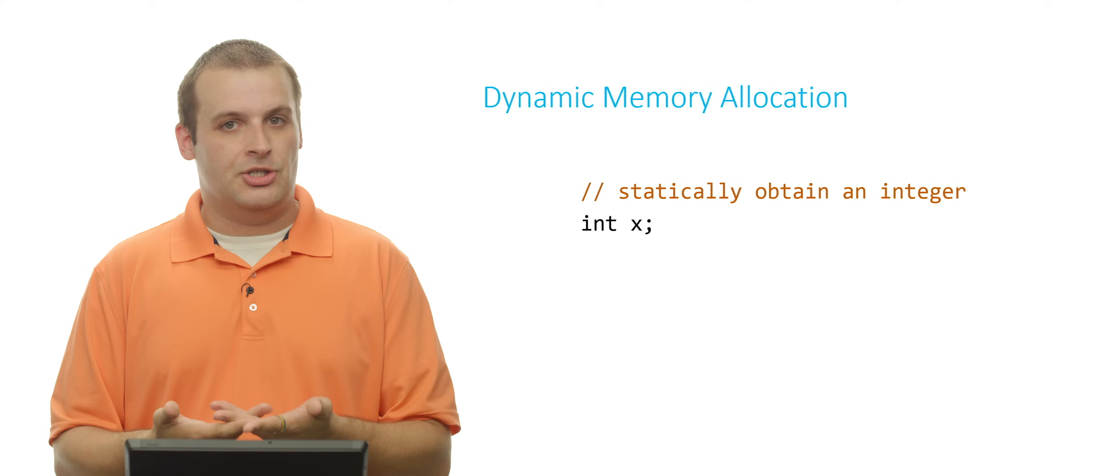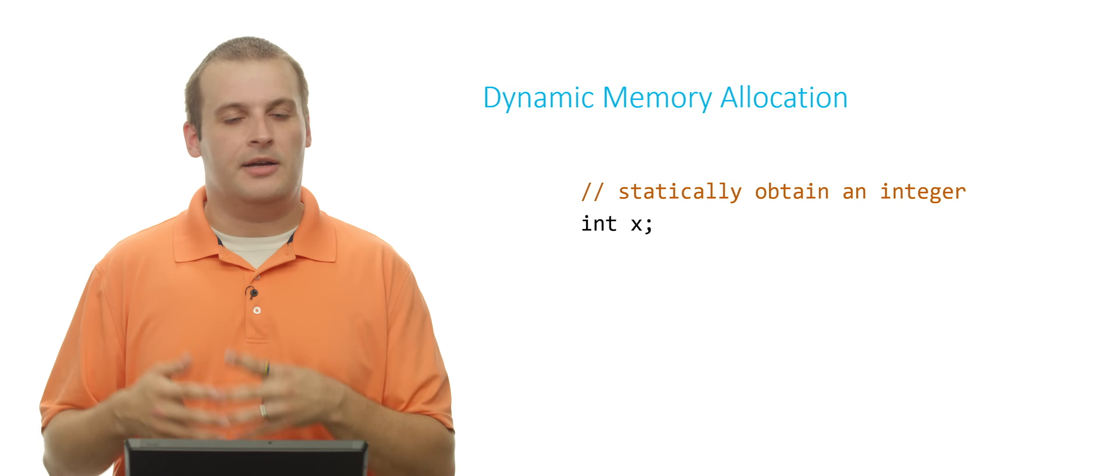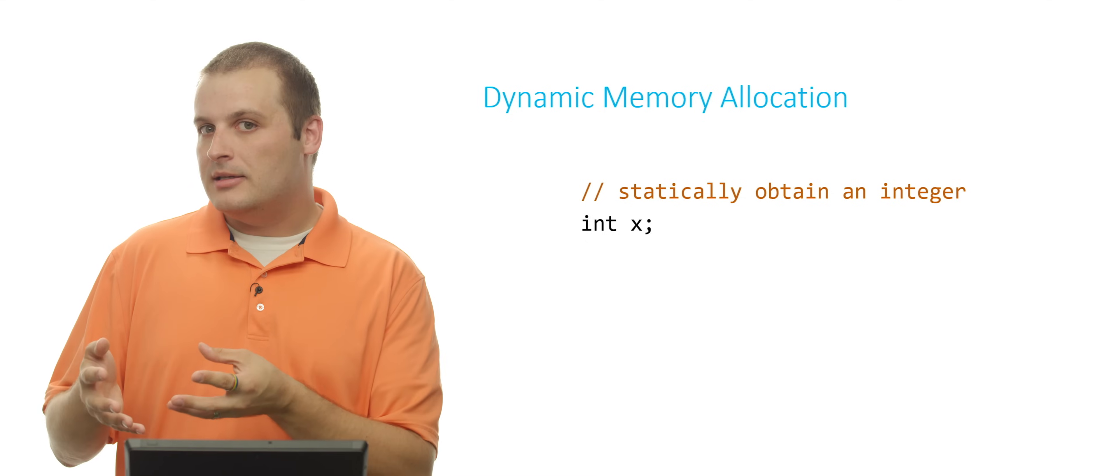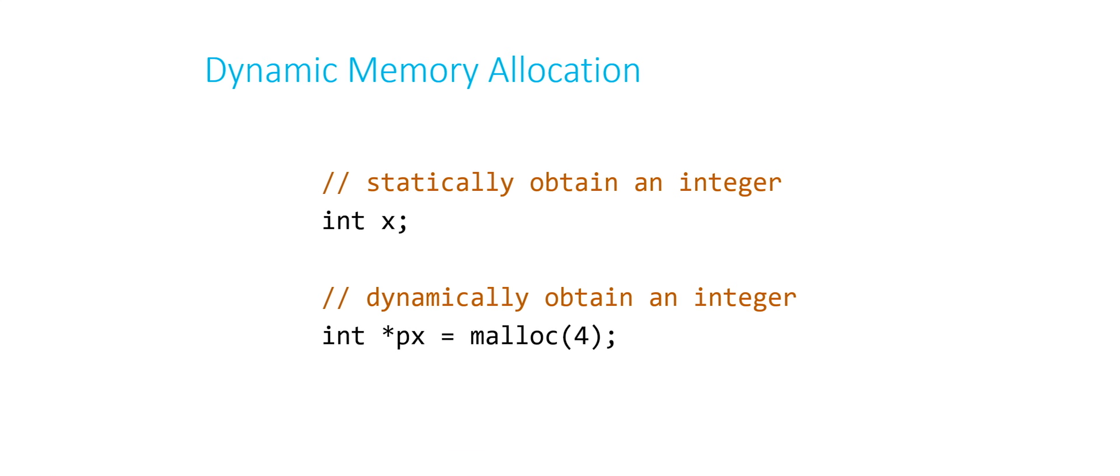So if we want to just get an integer, statically declare it, we can just say int x. That's going to create a variable called x on the stack that we can then assign any value that we like to. If you want to dynamically allocate an integer, we say the following. Int star px equals malloc four.